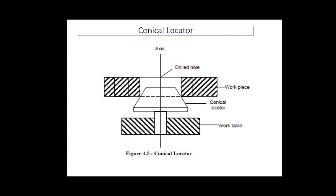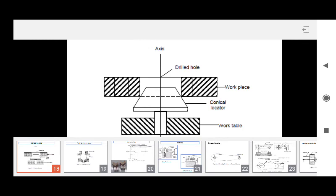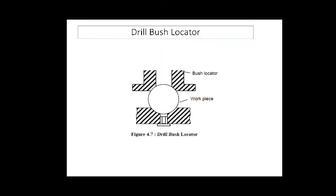Now let us see the drill bush locator. The drill bush locator is used for holding and locating cylindrical workpieces. The bush has a conical opening for locating purpose and is sometimes screwed onto the jig body for adjustment of height. Here you can see the drill bush locator where the cylindrical workpieces can be held.